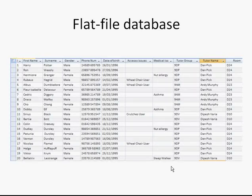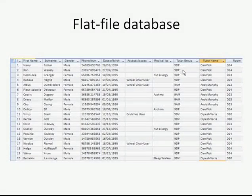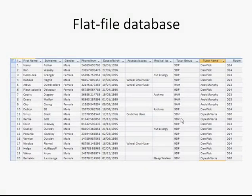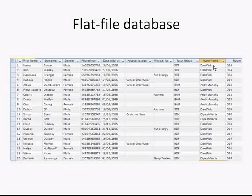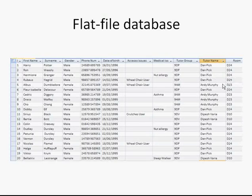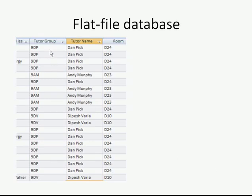Looking at this example, we have a list of students, their genders, phone numbers, and extra information, including their tutor group. Many students are in the 9DP tutor group, some in 9AM, some in 9DV. For anyone in 9DP, we can see their tutor is Dan Pick and their room is D24 — but that information is repeated time after time, many times within this table.